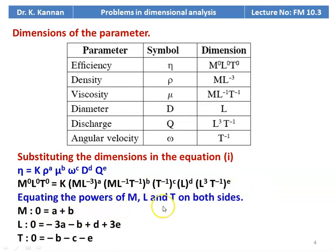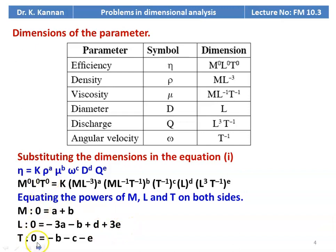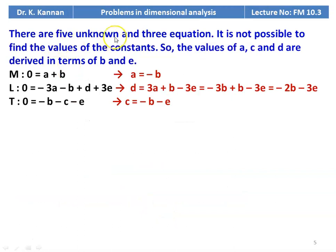Equating the powers of M, L, T on both sides: for M, 0 = a + b. For L, 0 = −3a − b + d + 3e. For T, 0 = −b − c − e. There are 5 unknowns (a, b, c, d, e) and only 3 equations, so it is not possible to find all constants independently.